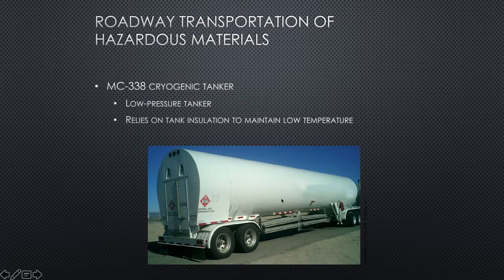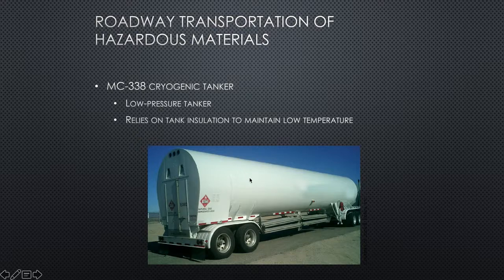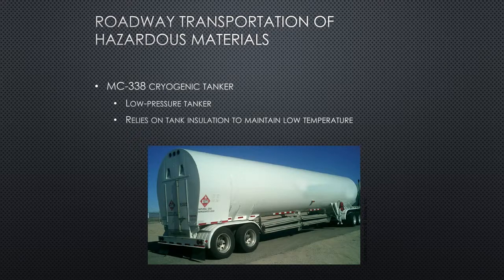A cryogenic tanker is a low-pressure tanker that relies on tank insulation to maintain low temperature, so it's going to be cold inside. The control valves are usually in a box-like structure on the rear of the tanker, and you must have special training to operate those valves — awareness-level hazmat training isn't enough. Small puffs of white vapor are vented from the control valves, and this is normal — not indicative of an emergency. Just because it's cryogenic doesn't mean it isn't dangerous; the placard may show the substance is flammable, such as natural gas.